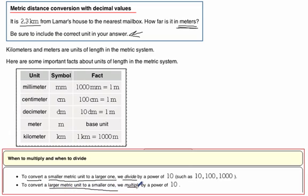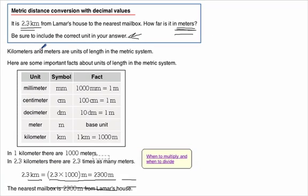So what are we doing here? From kilometers to meters. Kilometers are larger than meters. So that means we're going from large to small. From large to small we multiply.